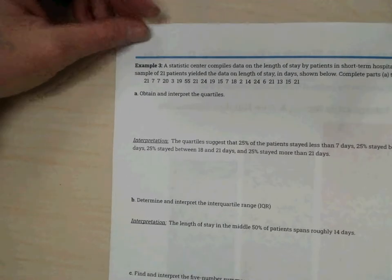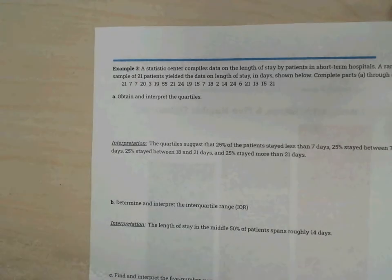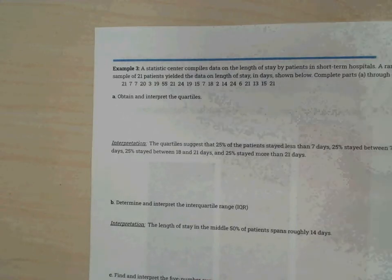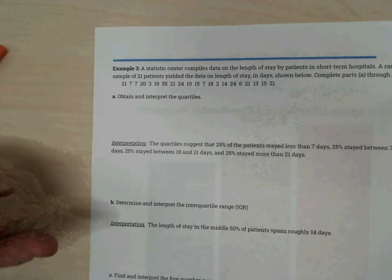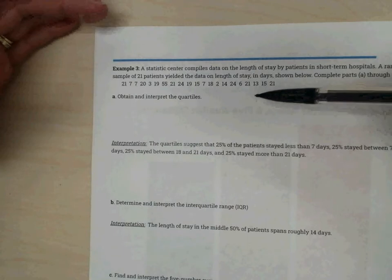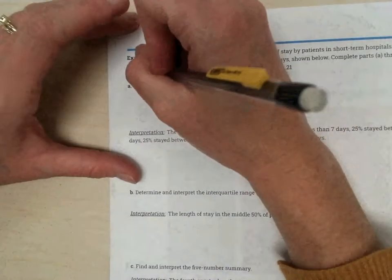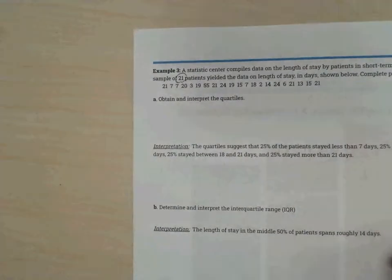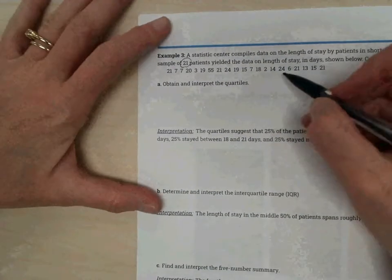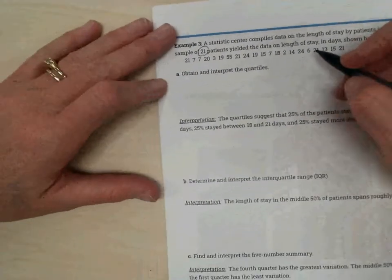Example three. Thank you. So again, I'm going to line these up from least to greatest. There's only 21 values. It's longer than the last one but not super long. So go ahead and write those out from least to greatest.